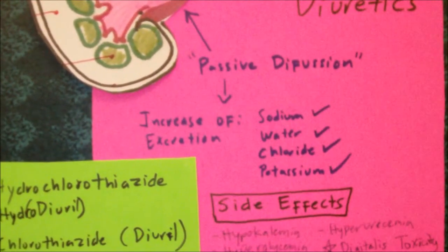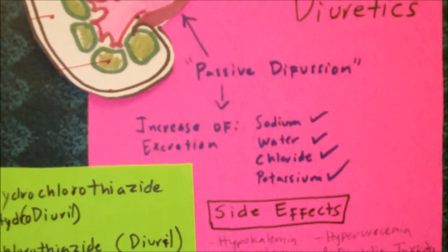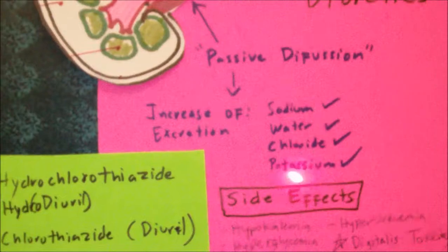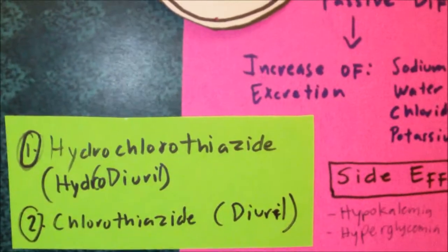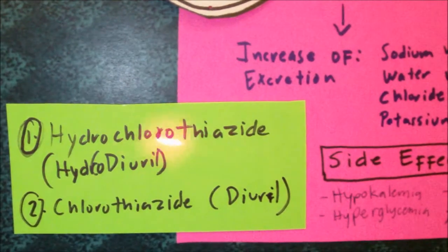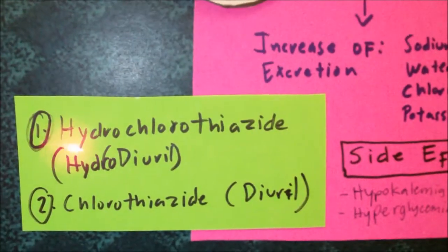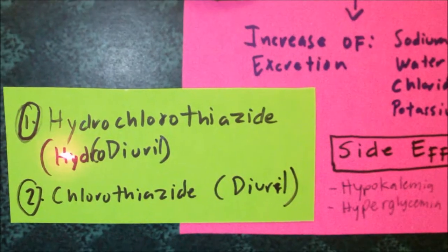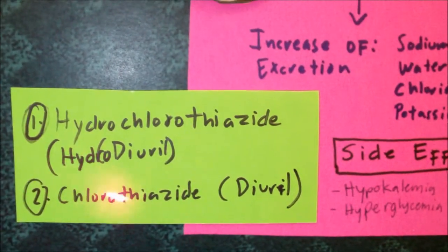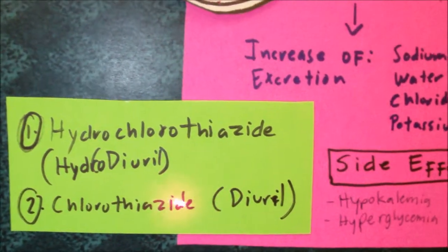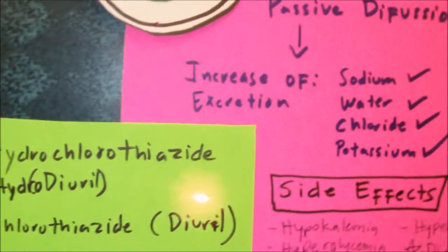Now the two most commonly used thiazide diuretics that you will or might encounter on the NCLEX exam would include hydrochlorothiazide, which is HydraDiuril, and chlorothiazide, which is Diuril.